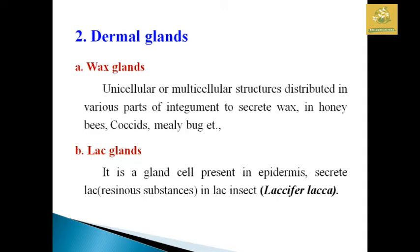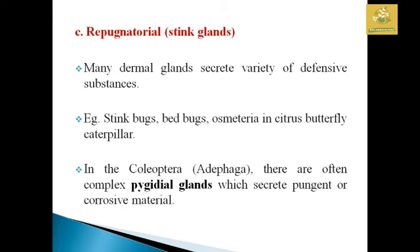The lac glands are present in the epidermis of scale insects, used to secrete lac as well as resinous substance in lac insects. Laccifer lacca is an example of a lac gland-producing insect. The odoriferous gland, also called the stink gland, is mainly used for a defensive mechanism in most bugs — for example, stink bugs, bed bugs, as well as in citrus butterfly caterpillars. In Coleoptera, they have a complex pygidial gland which secretes a pungent and corrosive material.